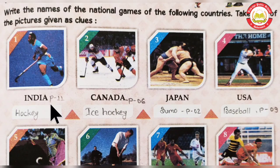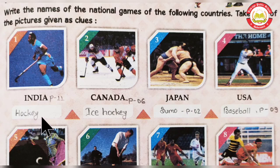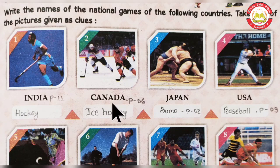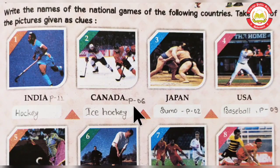How many players are in this game? In this game, 11 players are participating in one team. The second game is Canada. The national game of Canada is Ice Hockey. This game is played on ice. In this game, there are 6 players in each team.